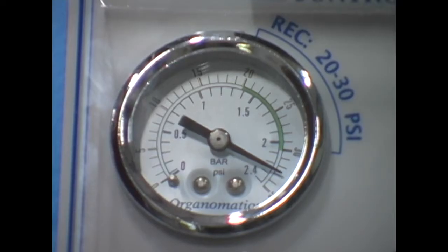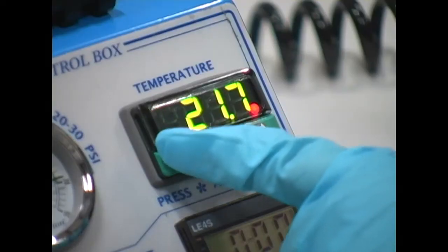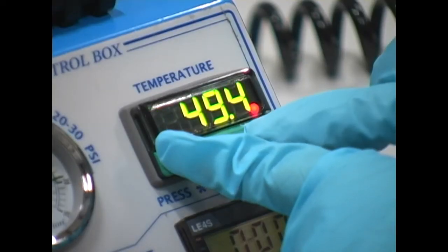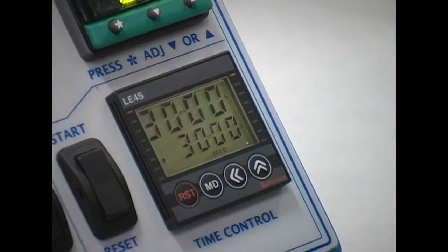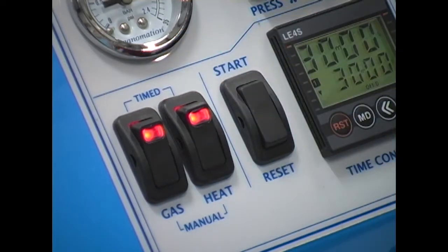The automatic 20 position Enovat comes with a digital control system to control the gas flow and water bath temperature. Simply set the timer and the instrument will raise the samples and turn the heat and gas off once the time cycle has been completed.